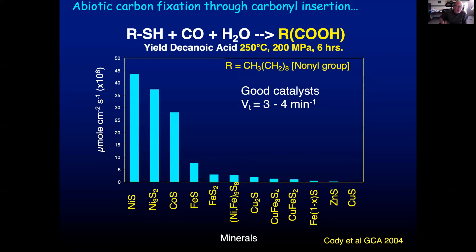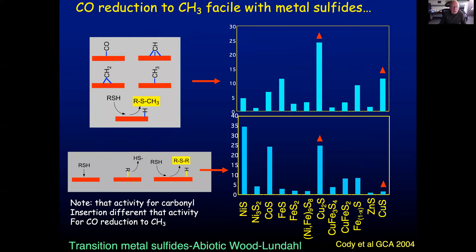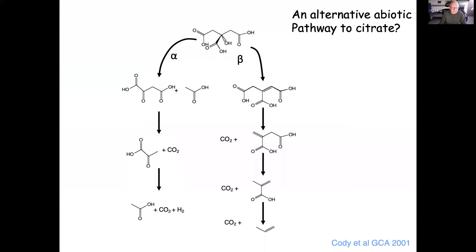We investigated whether natural sulfides could catalyze a carbonyl insertion reaction similar to the acetyl-CoA synthetase pathway in living systems. Nickel sulfide and heazlewoodite are fantastic catalysts; cobalt sulfide and most other sulfides also showed decent catalytic activity. Copper sulfide and copper sulfide with C1+ were two of the best catalysts for promoting the reduction of carbonyl groups to methyl groups, which were then transferable, and similarly good for forming thioether linkages. The transition metal sulfides are basically performing abiotic Wood-Ljungdahl-type metabolic carbon fixation.